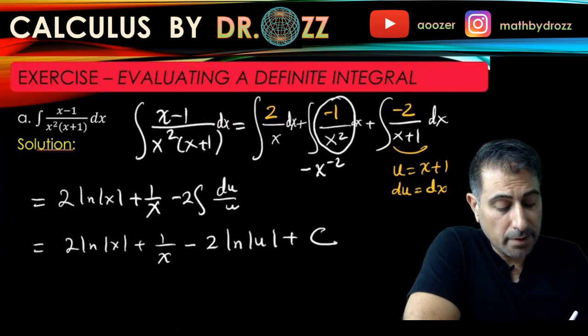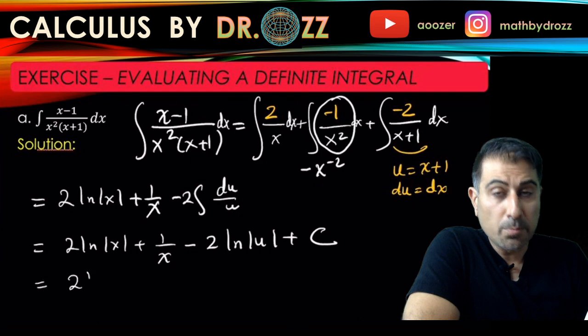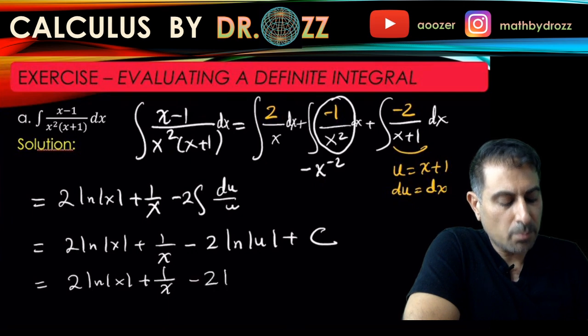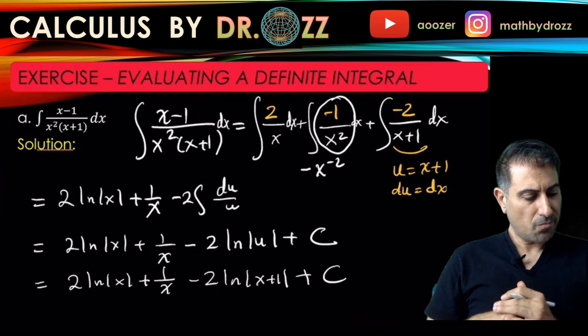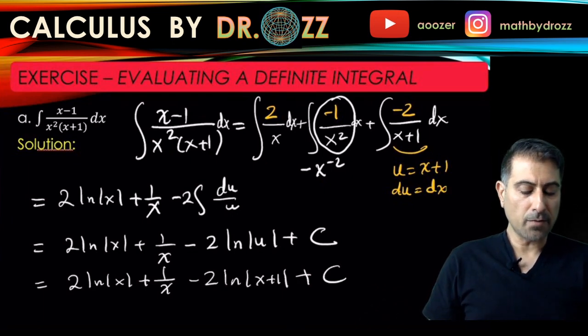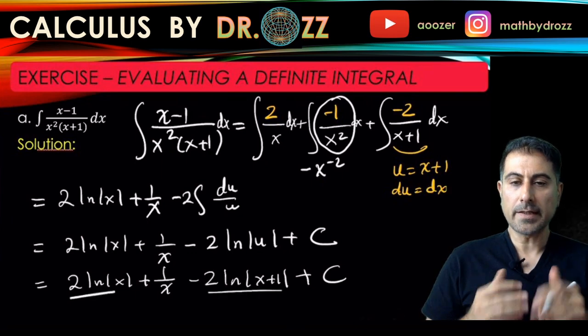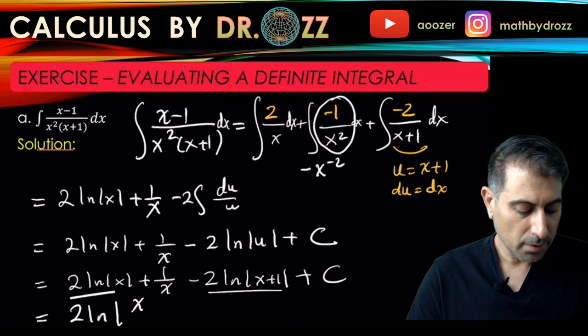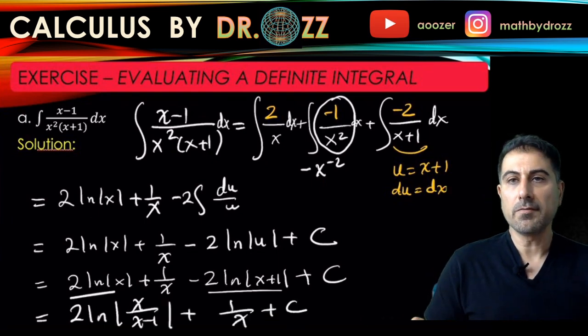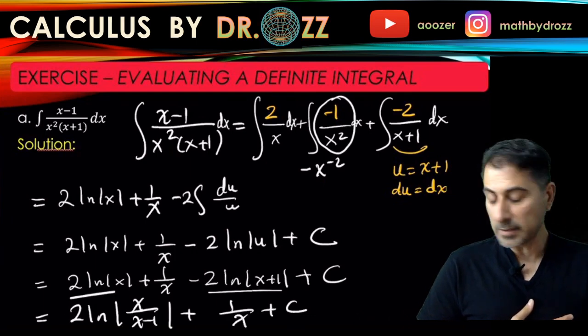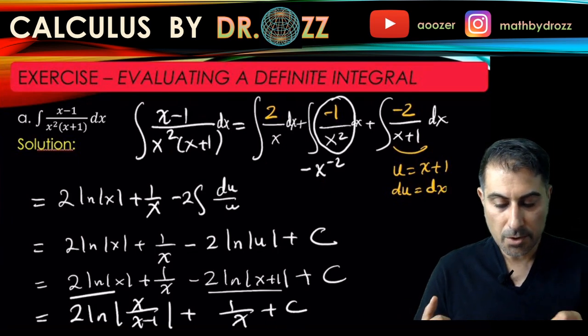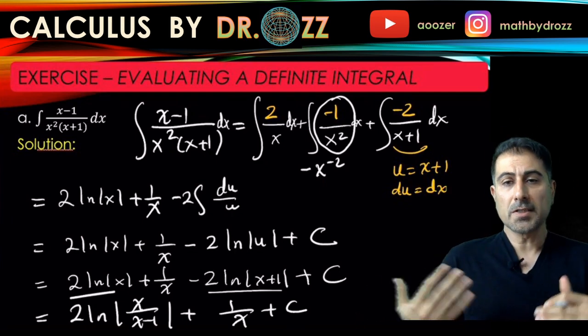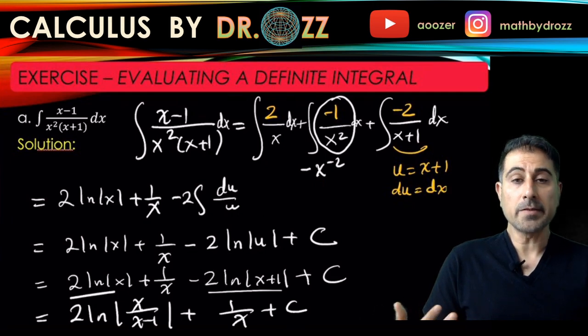I put one generic integrating constant here. So 2 ln absolute value of x plus 1 over x minus 2 ln x plus 1 plus c. I don't want to make this video longer, but you can also combine these two ln terms in 1. So it's like 2 factored out, ln x minus ln x plus 1. So I can write that by using the ln property as ln x over x minus 1 plus 1 over x plus c. Even this form is pretty good as is. So you don't really need to have these ln terms combined. And if this was a definite integral, then you would just put the limits in by using the fundamental theorem of calculus.